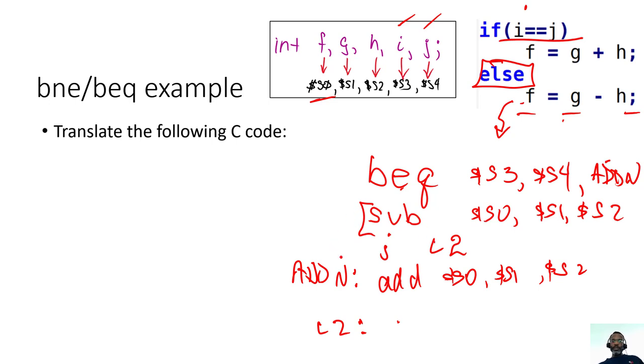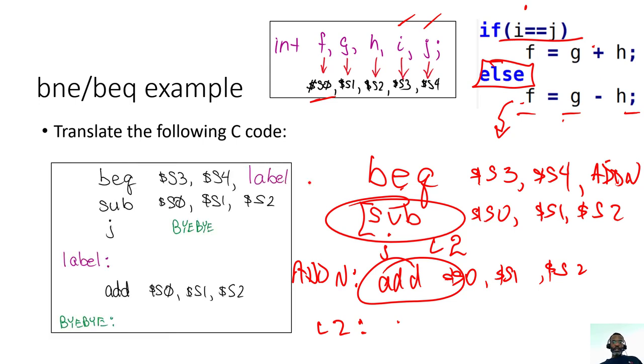And so what's interesting about this is that there's a subtraction up top and then an addition. Notice that in our code there was an addition up top and then a subtraction. So how does this compare? This looks like the code that we see here off to the left. So that's an example of the branch if equals, with the one kind of twist to it that the subtraction is first here.